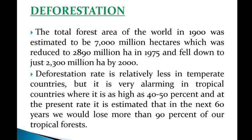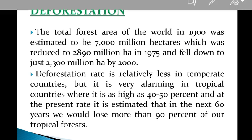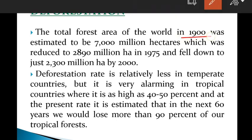First of all, the total forest area of the world in 1900 was estimated to be 7,000,000,000 hectares. This forested area was reduced to 2,890,000,000 hectares by the year 1975 — almost half was reduced. And it fell down to 2,300,000,000 hectares by the year 2000.